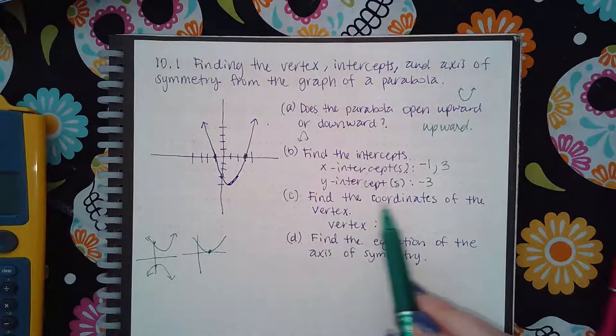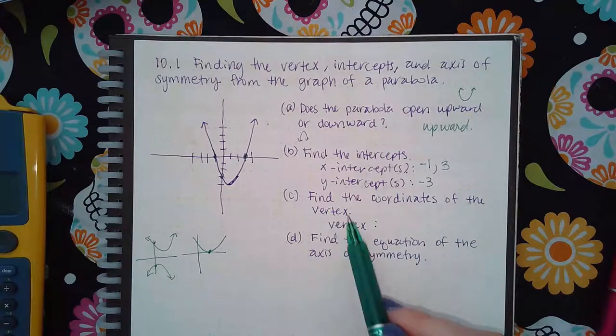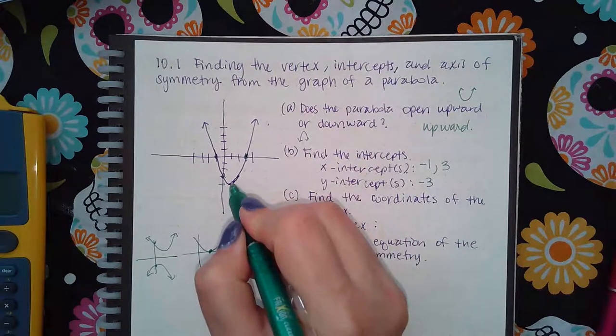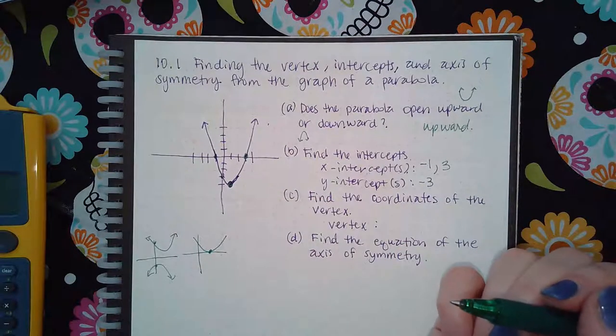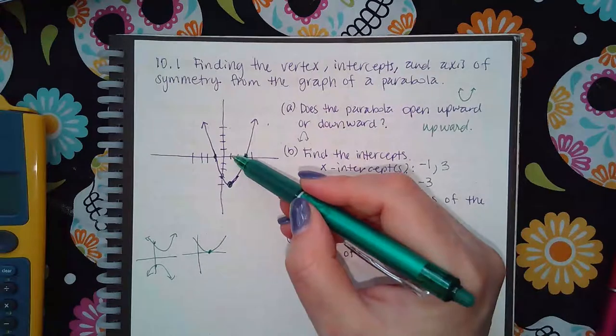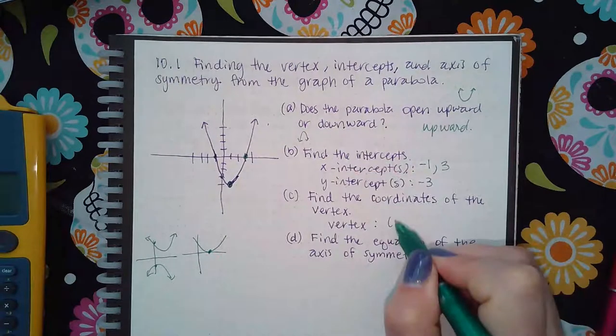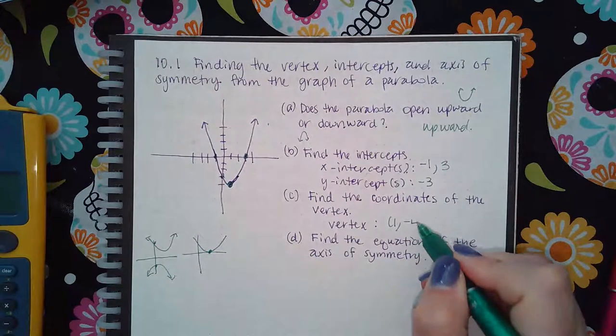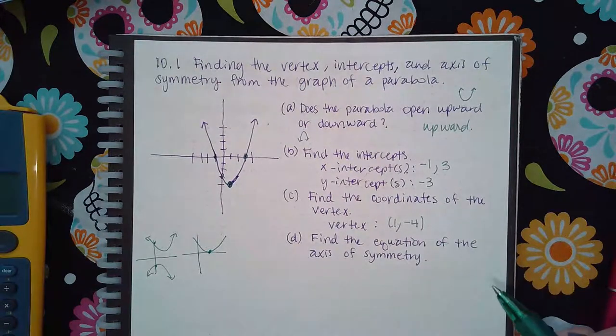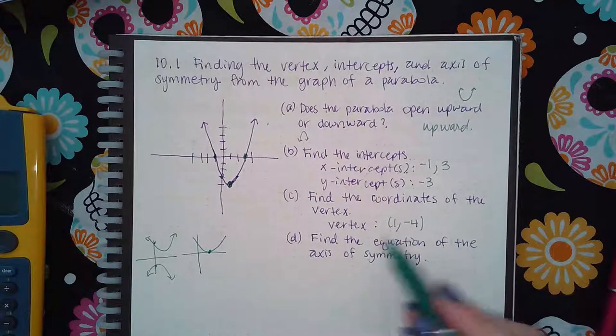Now, the coordinates of the vertex is you're going to find that peak wherever it is on your graph, and you're just going to give them the vertex coordinates. So it's positive 1 for x, and 1, 2, 3, 4, negative 4 for y. And so then that's the coordinates of my vertex.